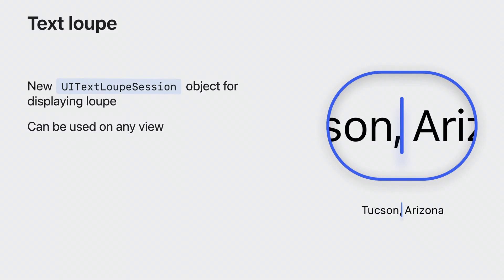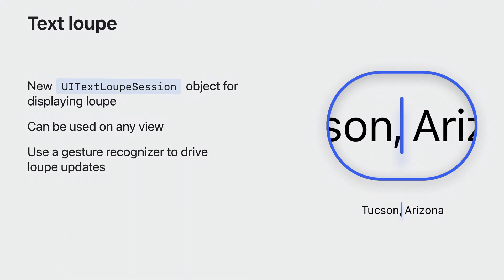In addition to UI text selection display interaction, we've also added a new API for displaying a loupe. It can be used on any view, and UI text selection display interaction or UI text input isn't required to use it. It's recommended to use a gesture recognizer, such as UI pan gesture recognizer, to drive the loupe's updates.